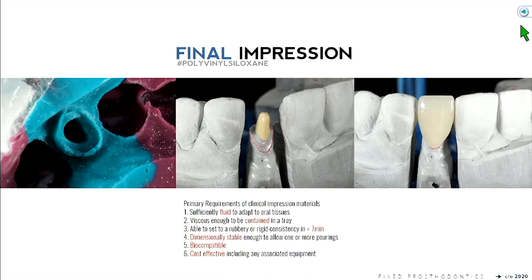It's got to set to a rubbery or rigid consistency in less than seven minutes — that's ideal for patient comfort. Ideally it would also be dimensionally stable, so you have the flexibility to pour the cast an hour, 24 hours, or even a week later. It should also be stable enough that when you separate the stone cast from the impression it isn't distorted, allowing you to pour it multiple times. Obviously it's got to be biocompatible, and then cost-effective.